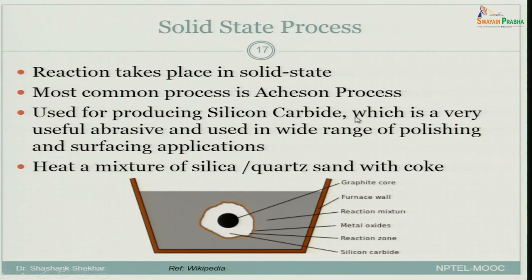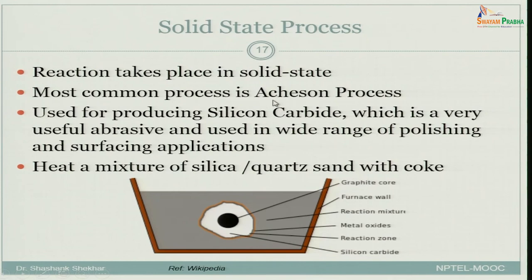One of the most common solid state processes is the Acheson process, used for producing silicon carbide. Surprisingly, this method came into being about a century ago, around the 1930s, and has been used since then to produce silicon carbide — a very useful abrasive used in a wide range of polishing and surfacing applications. In this process, at the core there is graphite or carbon, and on the outside you have the reaction mixture. When heated, silicon carbide forms.